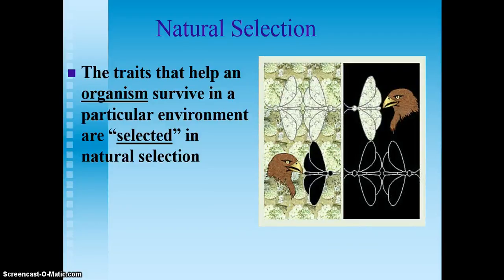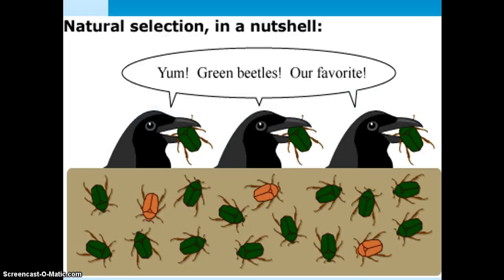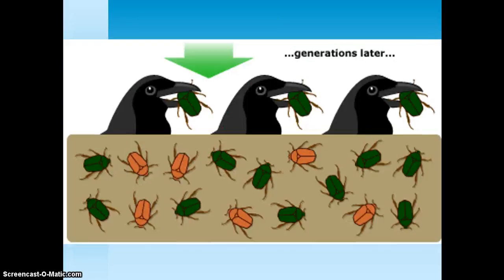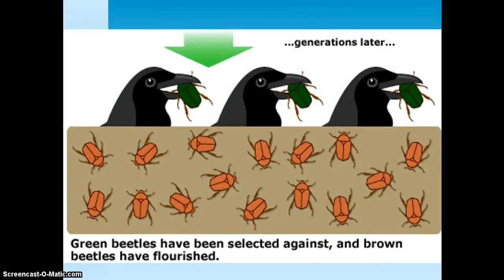In class, we'll look closely at the example of the peppered moth and industrial melanism. But right now this is just looking at beetles. So many of these beetles are green, some of them are brown. The birds like the green beetles so they keep eating them. Over time, more and more of those green beetles are eaten, and the brown ones are still alive. So it's starting to look like perhaps being not green is an advantage.